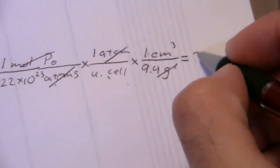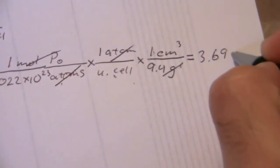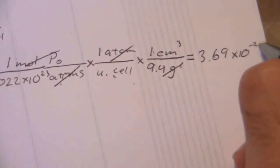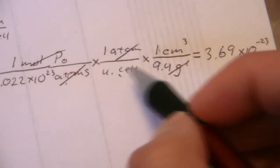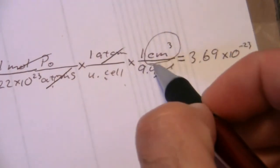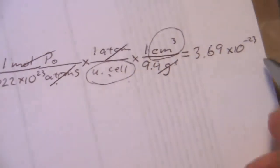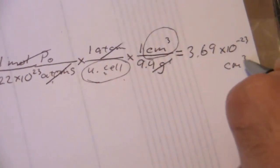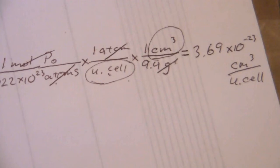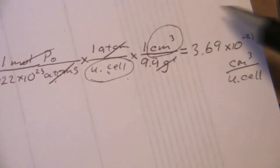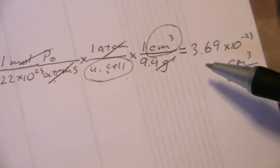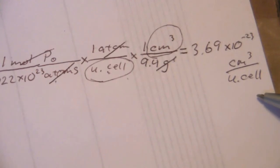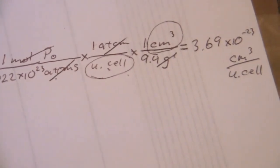and that gives me an answer of 3.69 times 10 to the negative 23rd. So here I'll have 3.69 times 10 to the negative 23rd, and this is cubic centimeters per unit cell. So now I'm going to take this value and take the cube root.